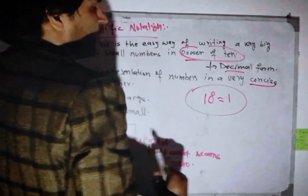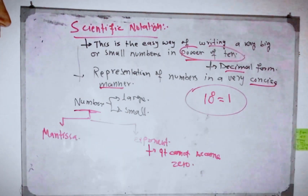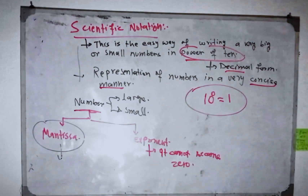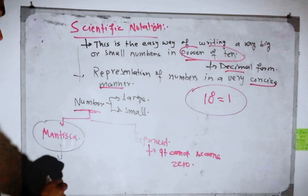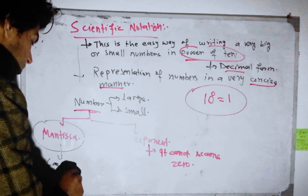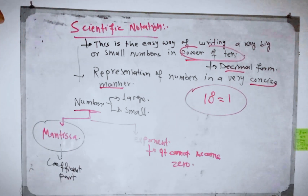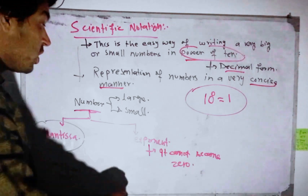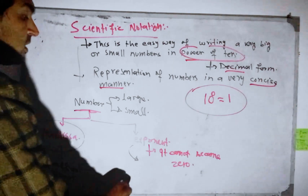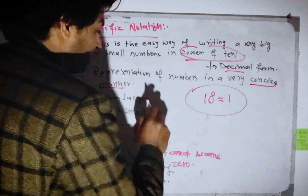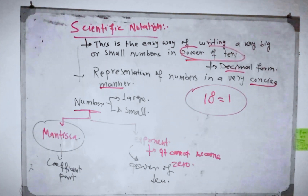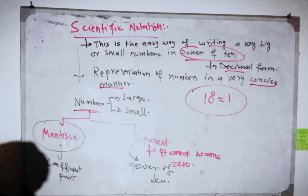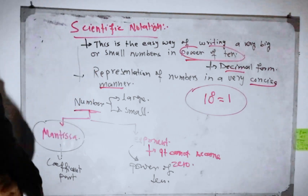Anything to the power of 0 is equal to 1. A number in scientific notation has two parts: the coefficient part and the exponent — the power of 10. F is equal to F, and P is equal to F; the exponent is equal to 10. Power of 10 is equal to 10. This is fundamental to scientific notation.